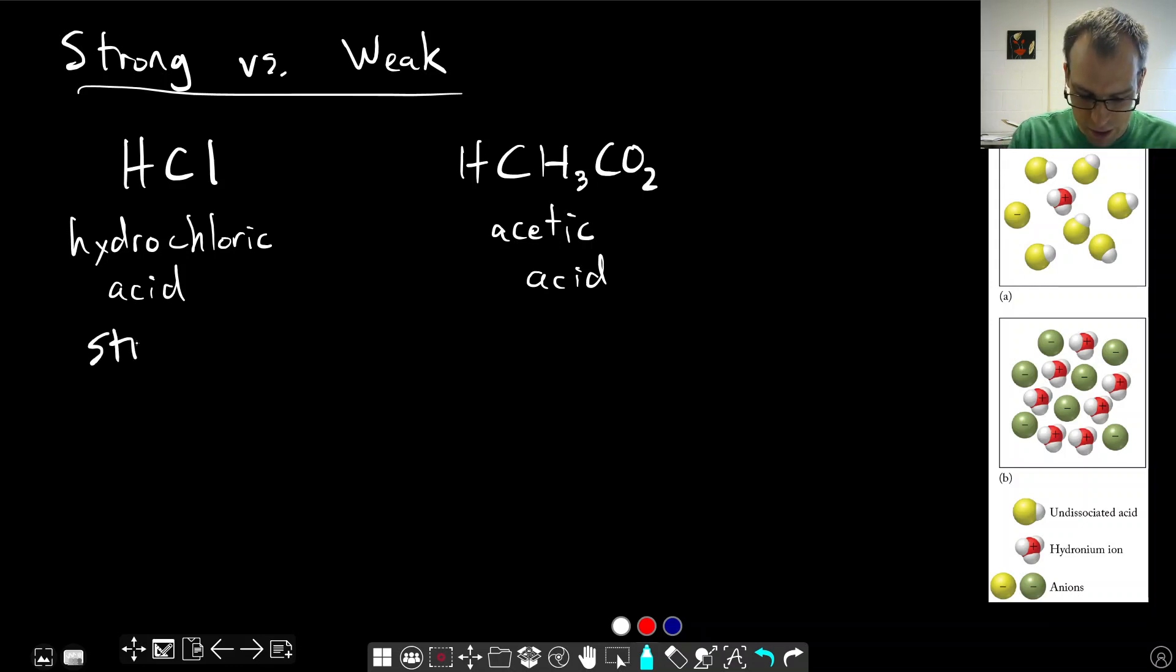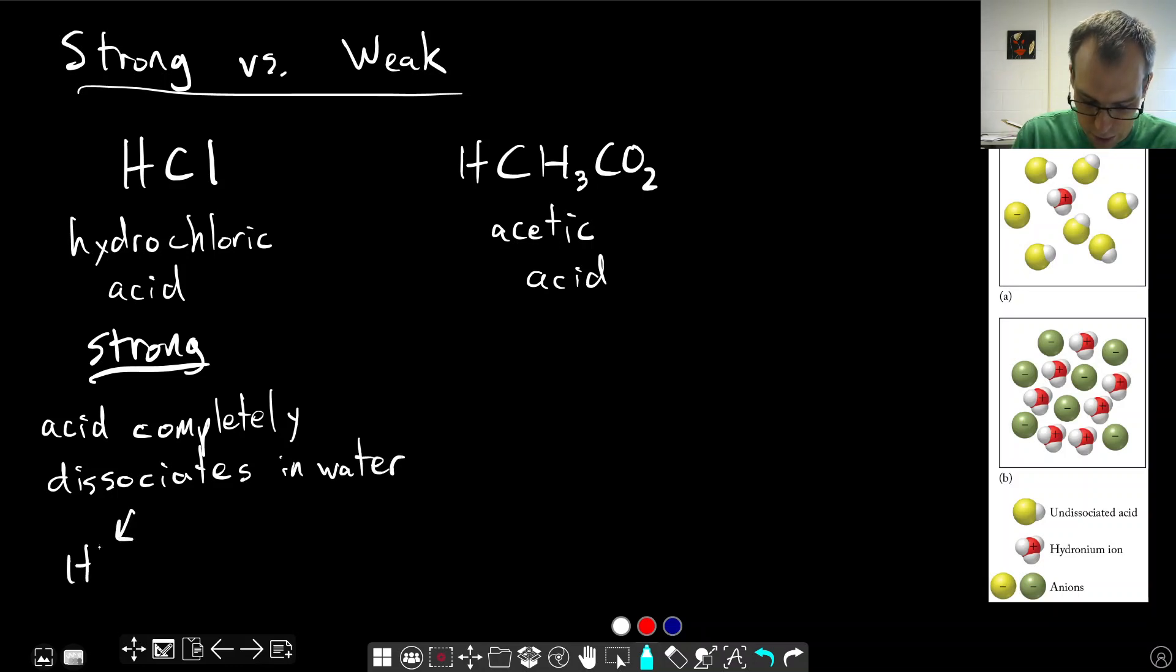So hydrochloric acid, this one is a strong acid. And what makes it strong? The acid completely dissociates in water. So what that means is that when we put HCl in water, when we put hydrochloric acid in water, it completely separates into H+ ions and Cl- ions. And there's not any HCl that still stays together. So that is what defines something as a strong acid.